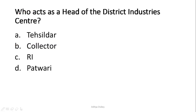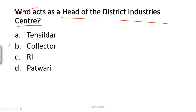The next question is: who acts as the head of the District Industries Center? District Industries Center का प्रधान या मुखिया कौन होता है? The correct answer is Option B, which is Collector. The District Collector acts as the District Industries Center's head.